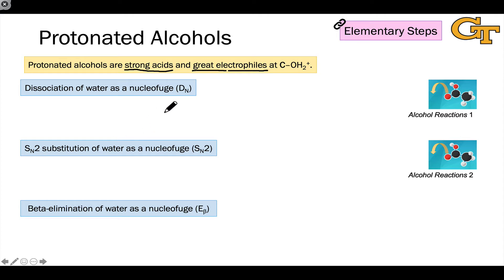For example, we often see the dissociation of water as a nucleofuge or leaving group occurring at these protonated alcohol structures. Here's one involving what was tert-butanol before protonation. Loss of water in a DN step in which the carbon-oxygen bond breaks towards oxygen gives the tert-butyl cation.